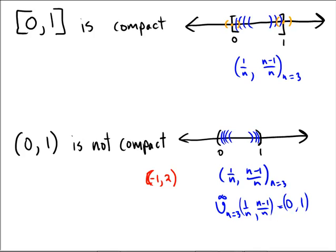So [0,1], the closed interval, is compact. Again, this is Heine-Borel formally, but this is kind of an example to better understand it. And the open interval is definitely not compact. Here is a witness. This is one infinite cover of the open set 0 to 1 that does not yield a finite subcover.